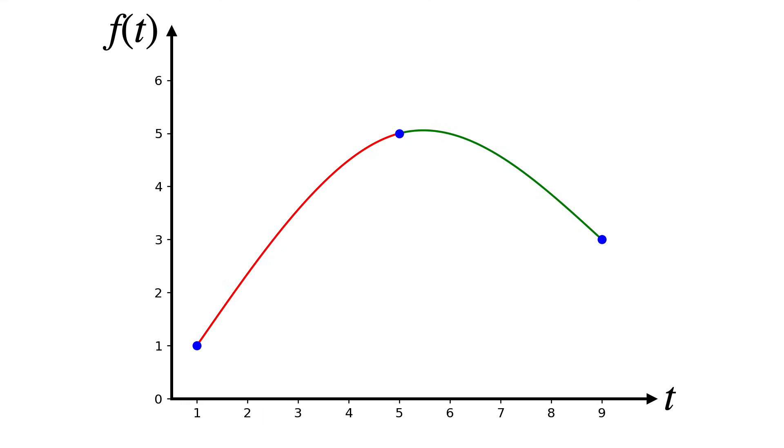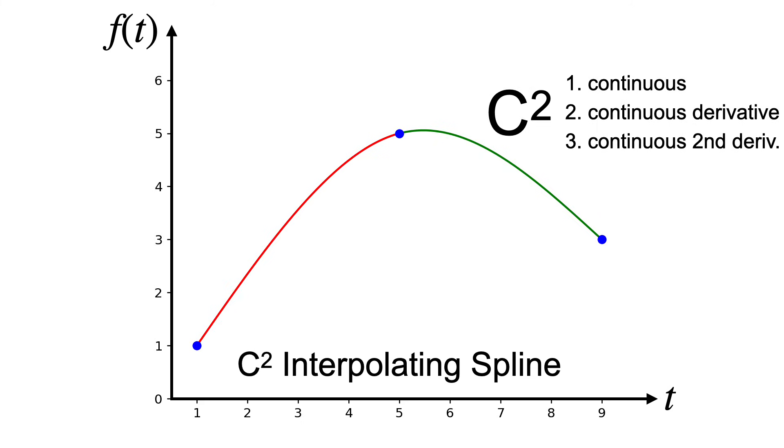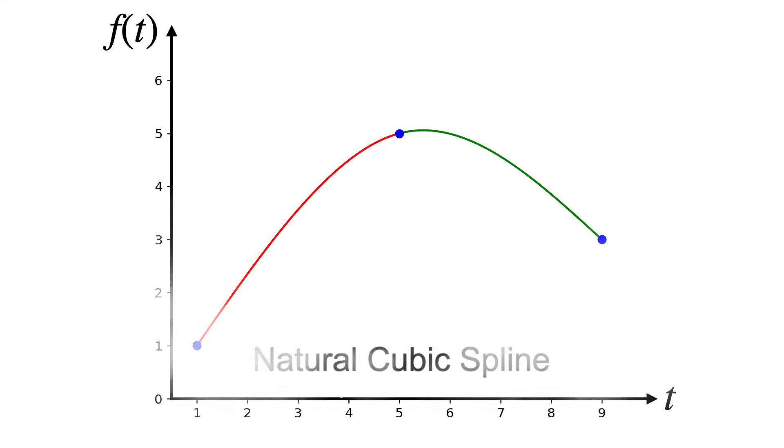Now that's a nice smooth curve. A curve like this, where both first and second derivatives are continuous across knots, is called C2. And because it passes through the control points, this is a C2 interpolating spline. The way we chose the last two constraints to have a zero second derivative at the endpoints makes this a special type of C2 interpolating spline, called a natural cubic spline.